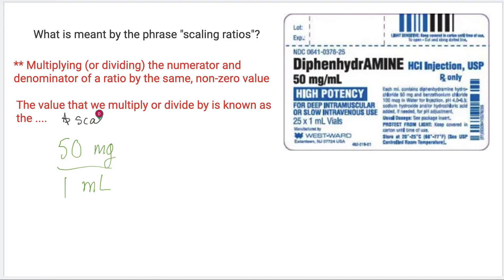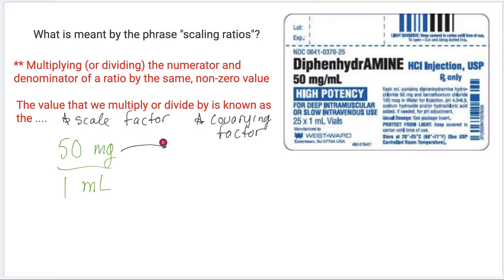We can scale the ratio using what's referred to as the scale factor, or we can call it the co-varying factor, meaning that the numerator and denominator co-vary together by the same value. Let me do an example and scale this ratio by a factor of 2. When we talk about a factor, it's multiplication. So if I scale this ratio by a factor of 2, I would multiply the numerator by 2 and the denominator by 2, and that will result in an equivalent relationship.